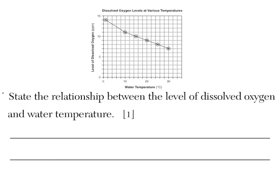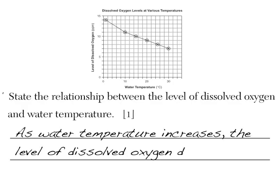All you have to do is use the bottom water temperature first, and write, as water temperature increases, the level of dissolved oxygen decreases. You always write the bottom one first. So the bottom thing on the graph was water temperature. I said that first. Since the graph is a downhill graph, it decreases.